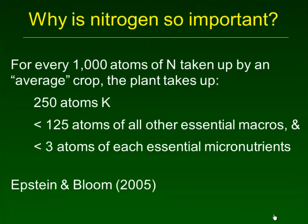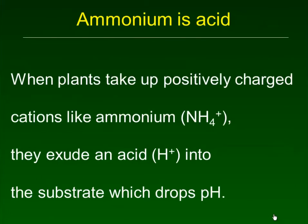Why do we focus on nitrogen? It's because there's more nitrogen taken up than the other fertilizer ions. For every 1,000 atoms of nitrogen taken up by an average crop, the plant takes up 250 atoms of potassium (K), less than 125 atoms of other essential macronutrients such as phosphorus or calcium, and only a very small amount of essential micronutrients. So nitrogen is the big player here.